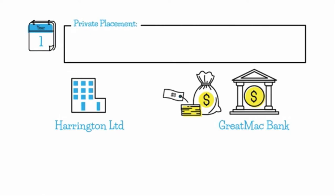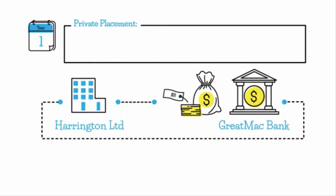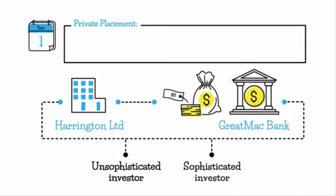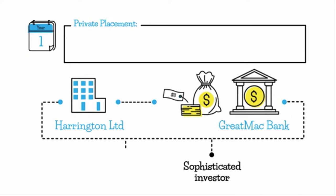The first thing you need to think about is what type of transaction this is. Is it with an unsophisticated investor, like the general public, or is it with a sophisticated investor? It's the latter, because it's a bank and it's a private placement — that's how we know.